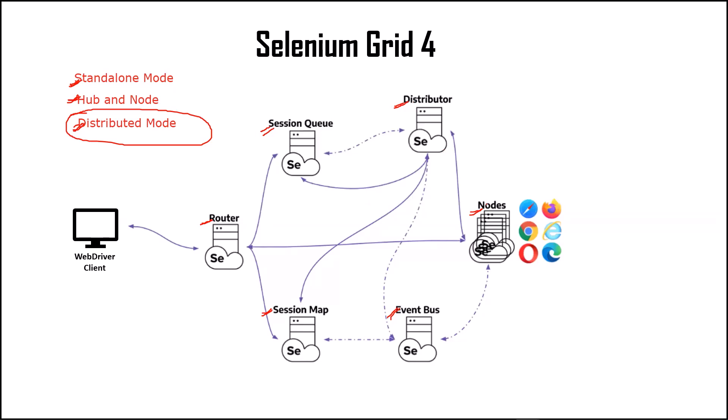The question is: which mode is ideal for you? If you have only five or fewer nodes, you can use standalone mode. If you have nodes ranging between 6 to 100, then use the hub and node approach. Distributed mode should be used when you need to support more than 100 nodes, which is rare, but if there is such a requirement, you should use distributed mode. Keep in mind that setting up the grid in distributed mode is the most complex among all three modes.